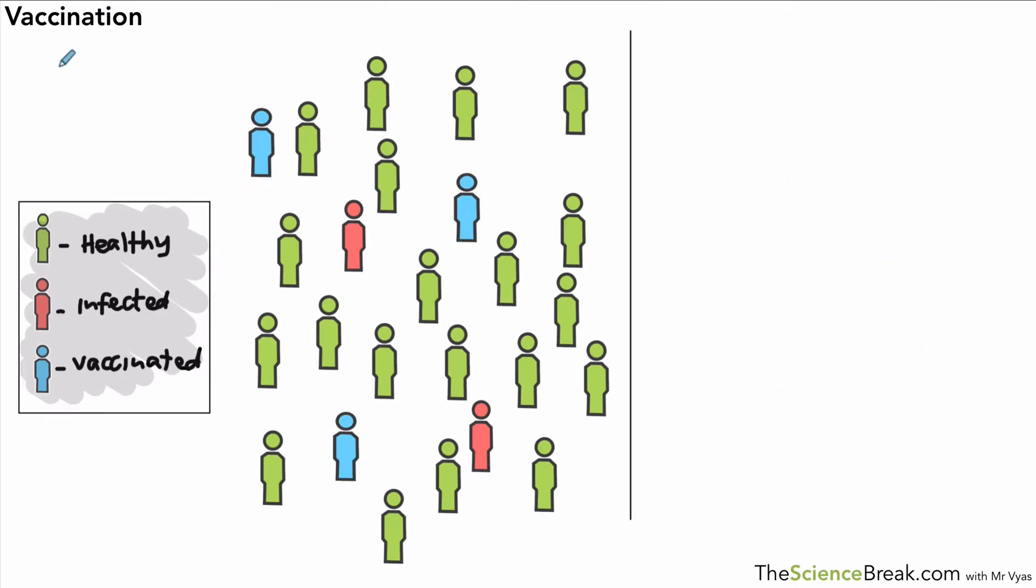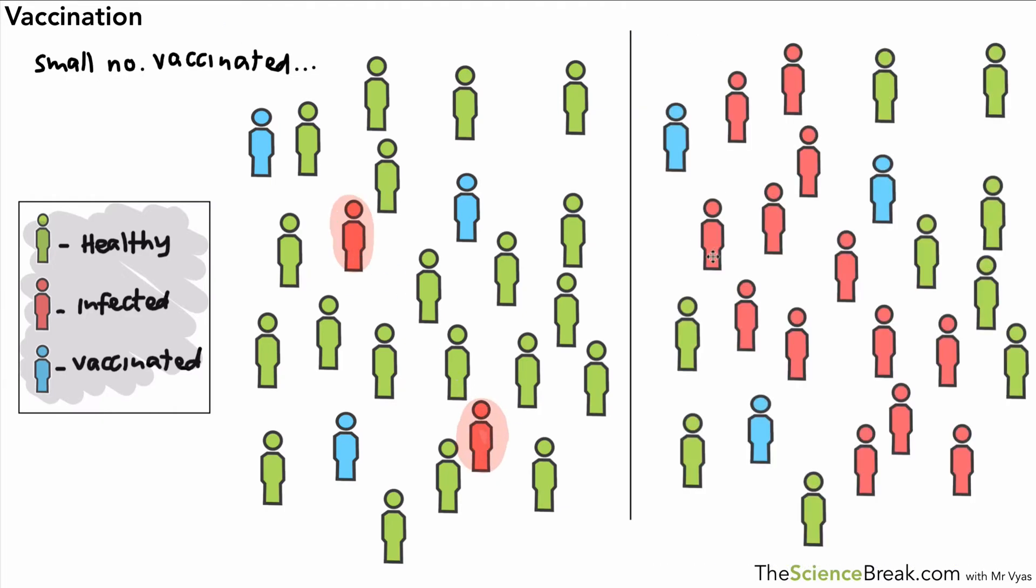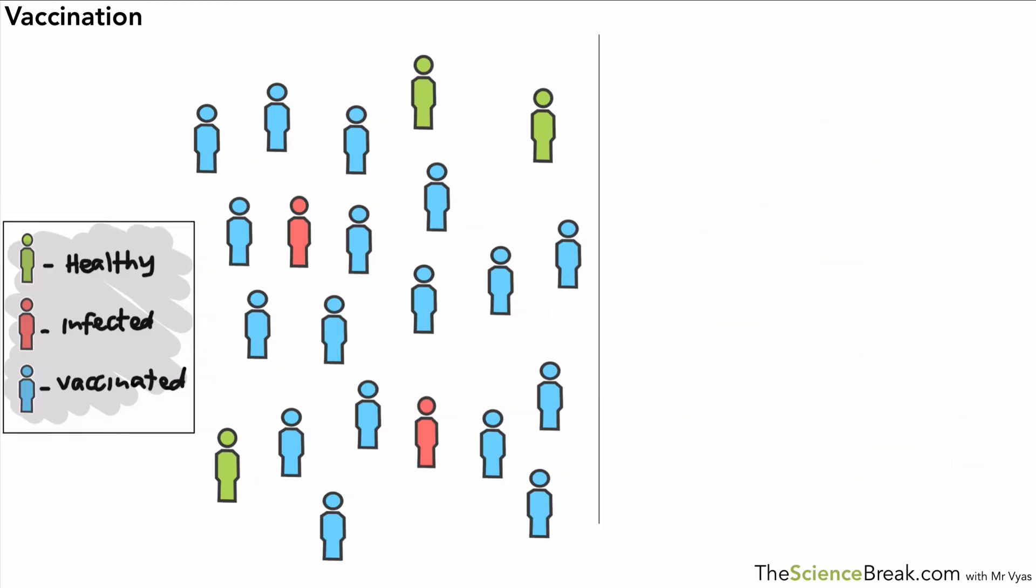Now imagine we vaccinated a few people, so there in blue you can see a small proportion of that population that's been vaccinated. What do we expect will happen? Well we're still going to have a bit of a problem because those infected people there are still surrounded by people who are not vaccinated and again the disease is going to be able to spread to those non-vaccinated people. So you can see there how that disease could spread.